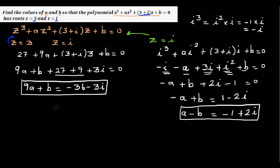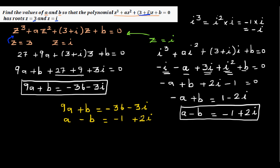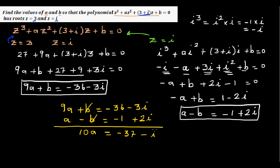Now we solve the two simultaneous equations: 9a + b = -36 - 3i and a - b = -1 + 2i. Adding them gives 10a = -37 - i, so a = (-37 - i) / 10.